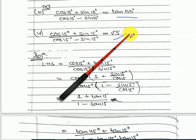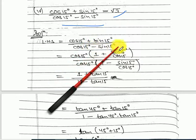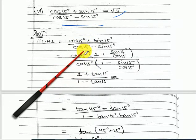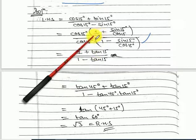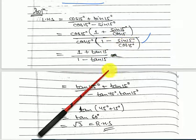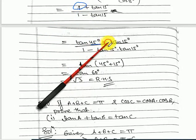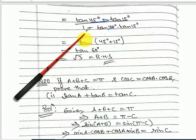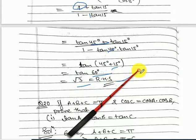Number 4: prove that (cos 15 plus sin 15) upon (cos 15 minus sin 15) equals root 3. Take the left hand side. Take cos 15 as common in numerator and denominator. The cos 15 terms cancel, giving (1 plus tan 15) upon (1 minus tan 15). Write 1 as tan 45, so you get tan(45 plus 15) equals tan 60 equals root 3. Left hand side equals right hand side, proved.